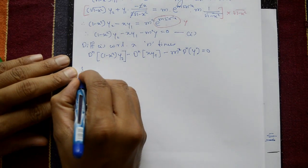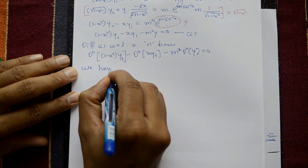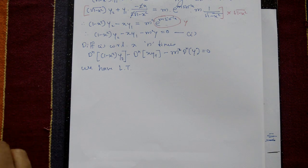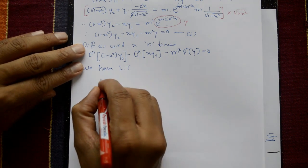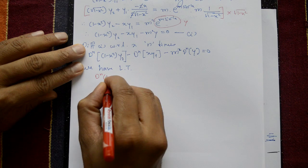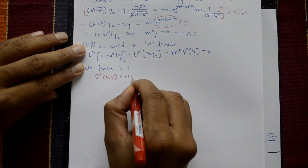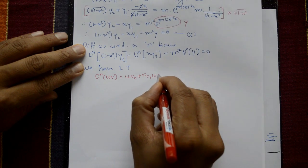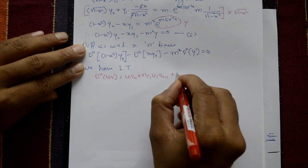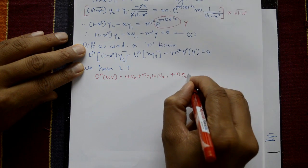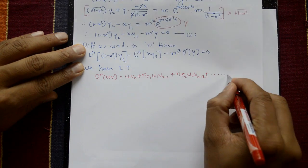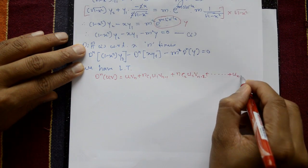So now, we have Leibniz's rule. Leibniz's rule is: d raised to n of u·φ equals u·φ_n plus nC1·u1·φ_{n-1} plus nC2·u2·φ_{n-2} plus so on, plus u_n·φ.